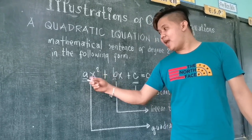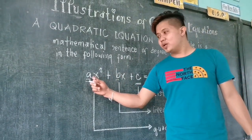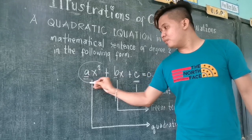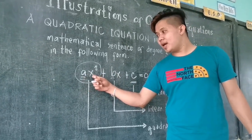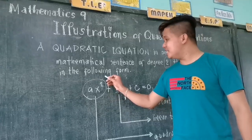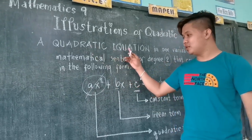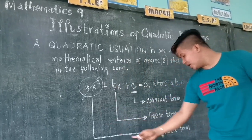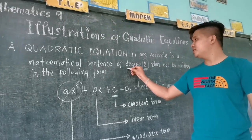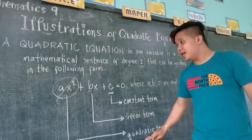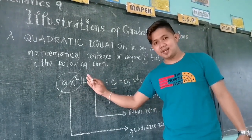However, 'a' must not be equal to zero. This is because ax squared is called the quadratic term. If we put 'a' as zero, this term will no longer exist — zero times x squared means nothing. The absence of the quadratic term means the equation is no longer of degree 2, which is why the quadratic term is very important in a quadratic equation.